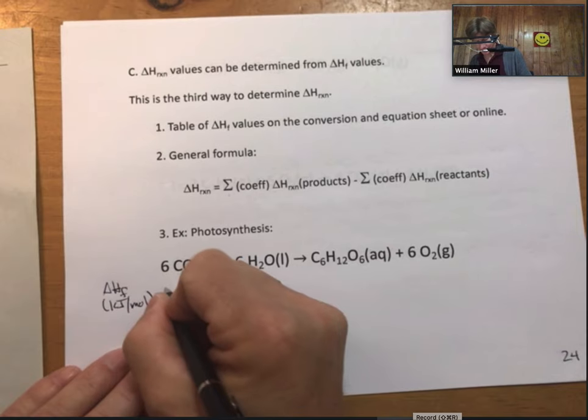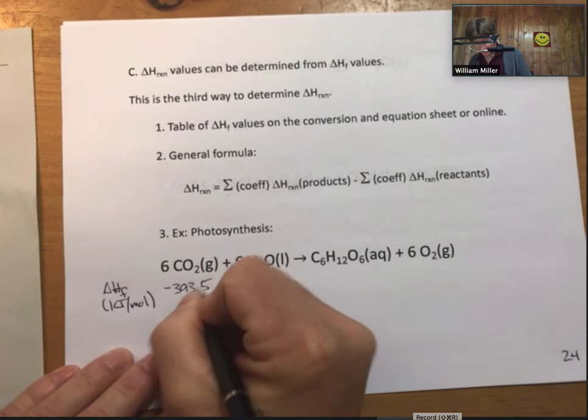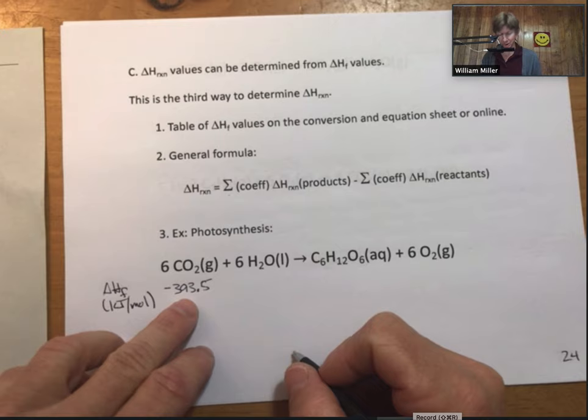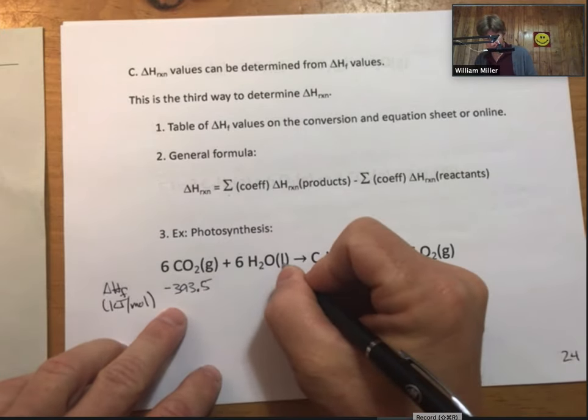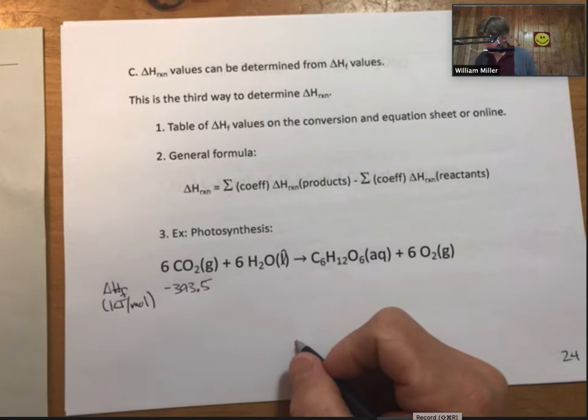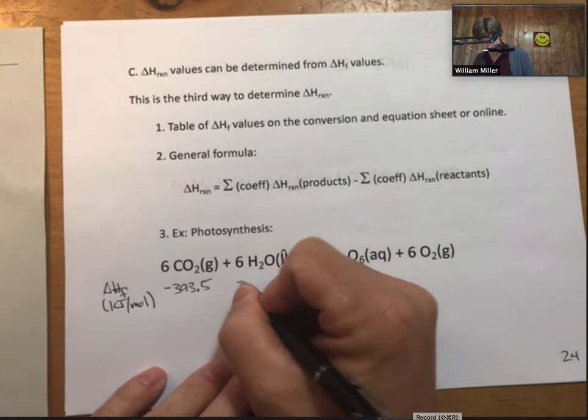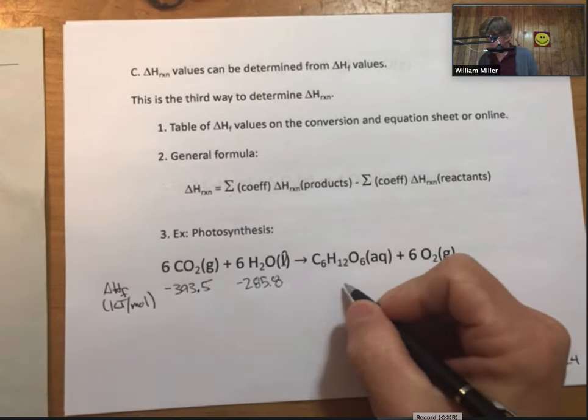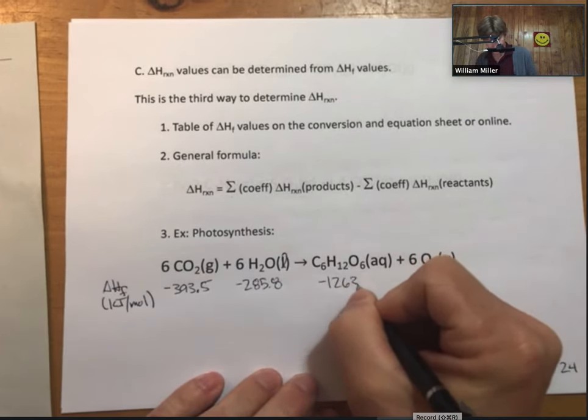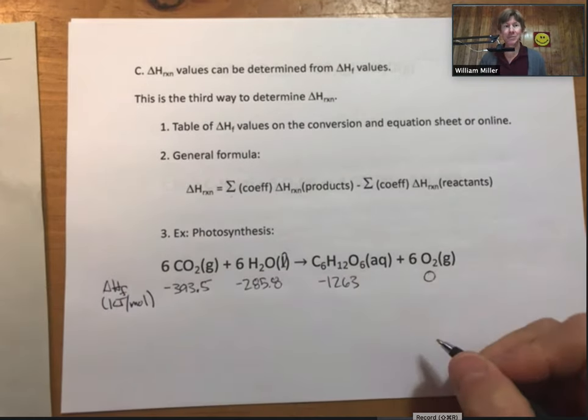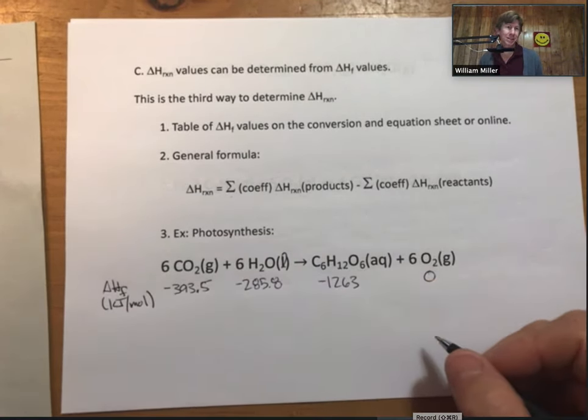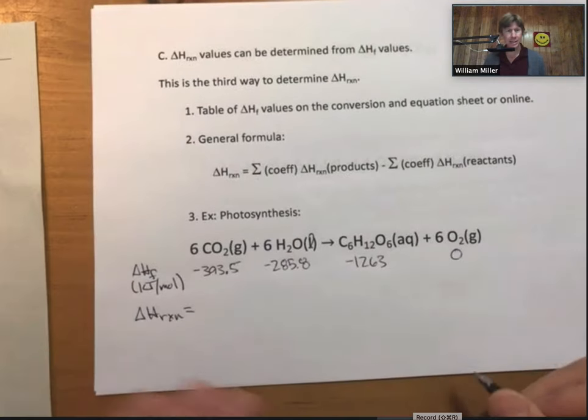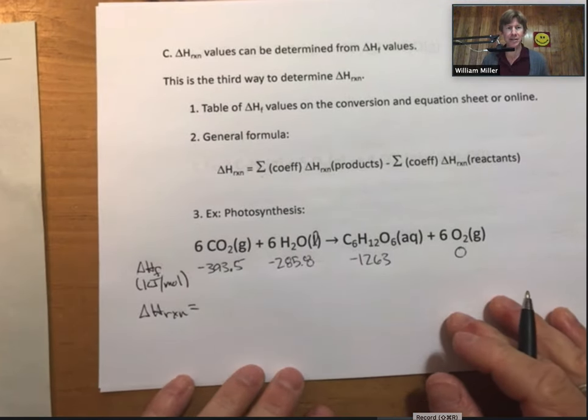this is going to be minus 393.5, and I'm not doing the coefficient parts yet. I'm just writing the numbers. For H2O liquid there, that's an L, H2O liquid, minus 285.8. Aqueous, C6H12O6, minus 1263. And oxygen, simply zero. You can look it up, or you can know it is the lowest energy state. Now, application of this formula.